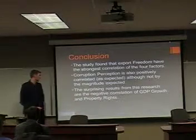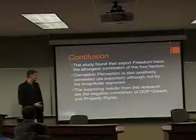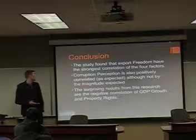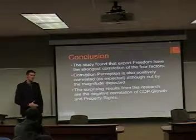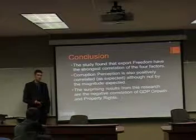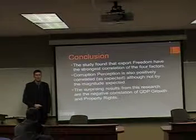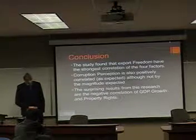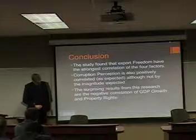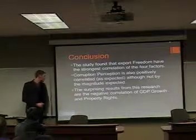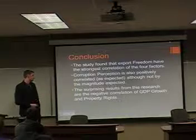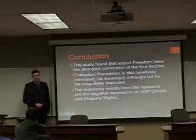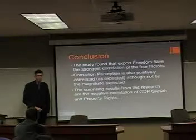Surprisingly, though, were the negative correlations between GDP and property rights. The best explanation I came up with for GDP is that as GDP increases, real wages go up as well, which in effect makes it less appetising to invest money in that country as opposed to some other country where wages haven't increased. And finally, for property rights, I believe my explanation is that foreign direct investment is quite highly concentrated in developing countries, and as such they don't have the legal protections available that other countries do. Thank you.